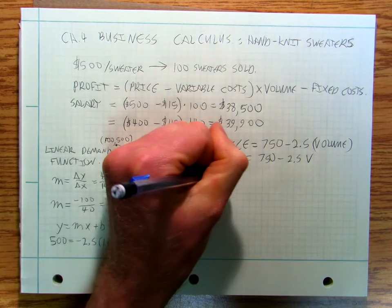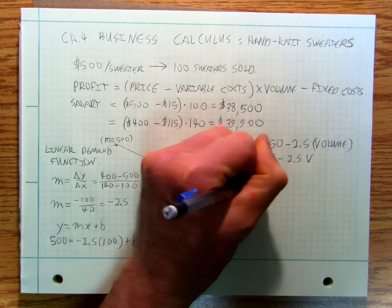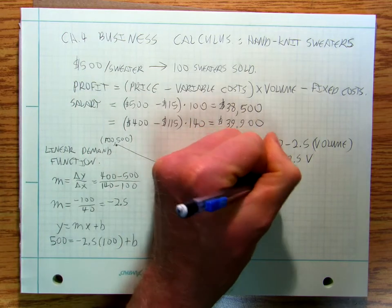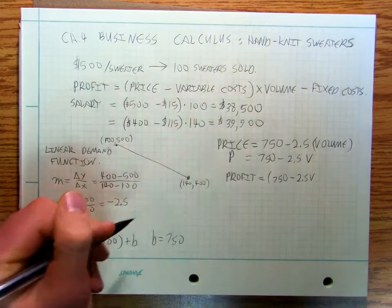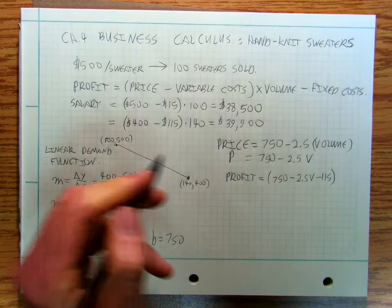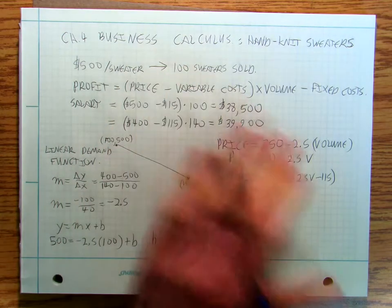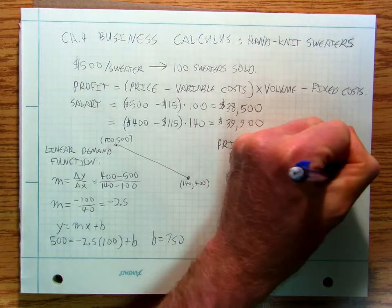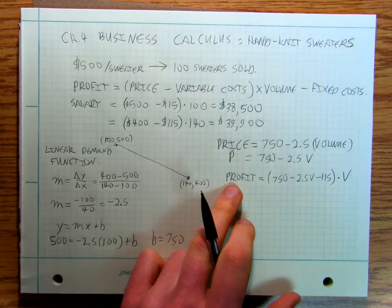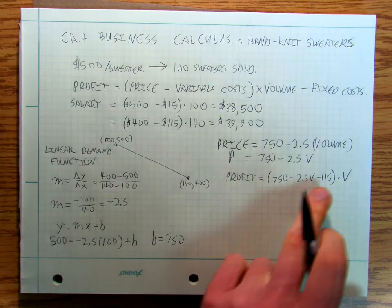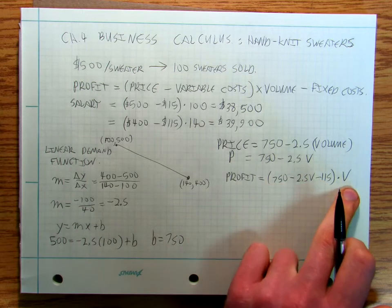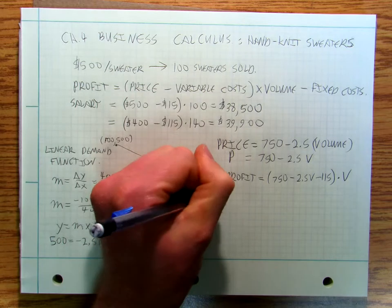So now my profit is going to be equal to 750 minus 2.5V minus my variable cost which is 115. And there's other things that go into that as well, so I'm making horrendous simplifications, but just so you can get an idea of where we're heading with this. So my profit is going to be my demand minus my demand price minus my fixed cost times my volume.